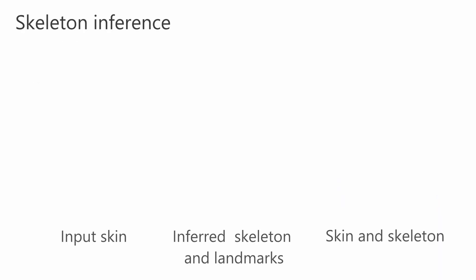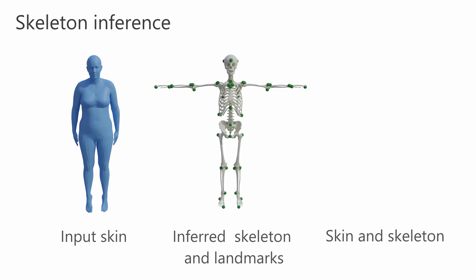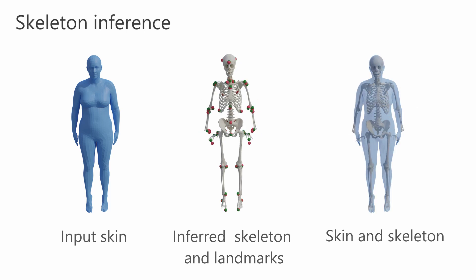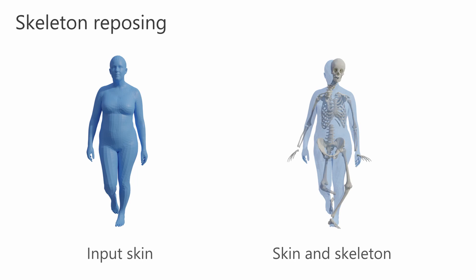At inference time, given an unseen body shape, we predict the skeleton shape and bone landmarks, then optimize the skeleton to fit those. Finally, we can repose the skeleton to a target pose.